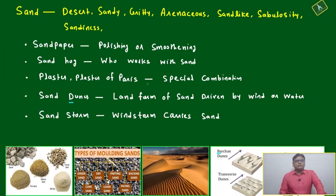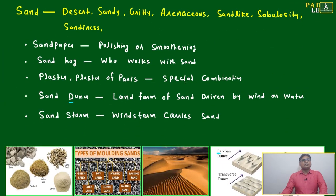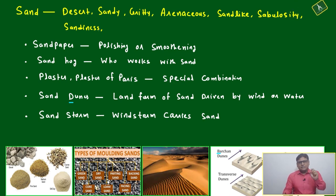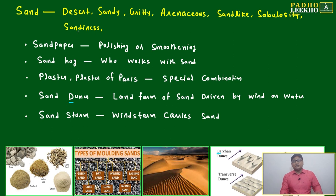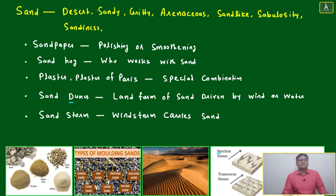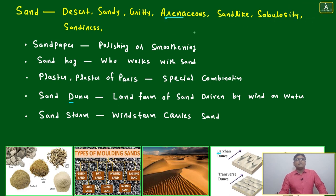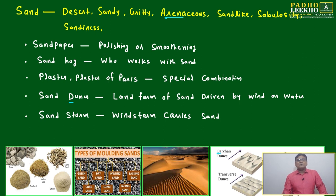Now we'll come to the next category of soil, which is called sand. When we think of sand, a desert immediately comes to mind. Sand is described as sandy, gritty, and sandpaper-like. Sandpaper is used for polishing or smoothening metallic surfaces.